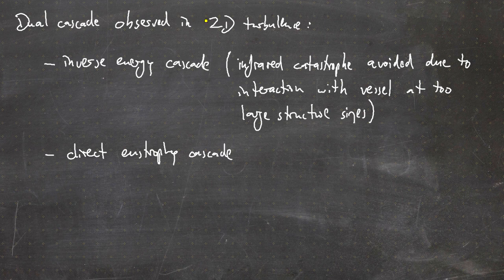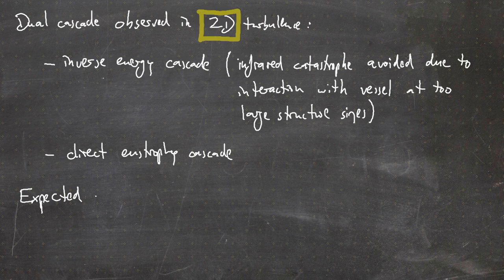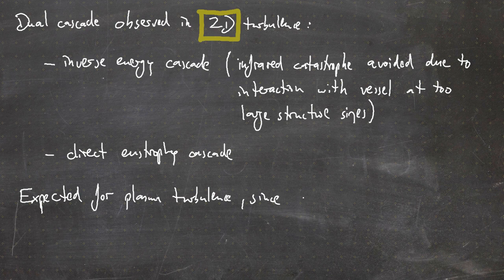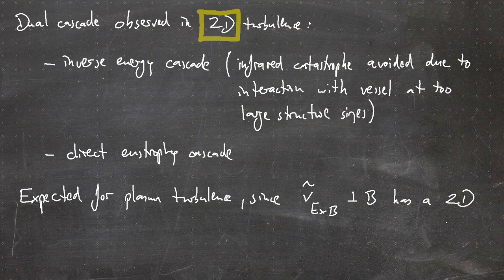In 2D turbulence a dual cascade is observed. On one hand we have the inverse energy cascade, and on the other hand we have the direct enstrophy cascade. This is expected for plasma turbulence since the drift velocity — the drift of the perturbed quantities due to an initial perturbation of the density, for example perpendicular to the magnetic field — has a 2D nature.